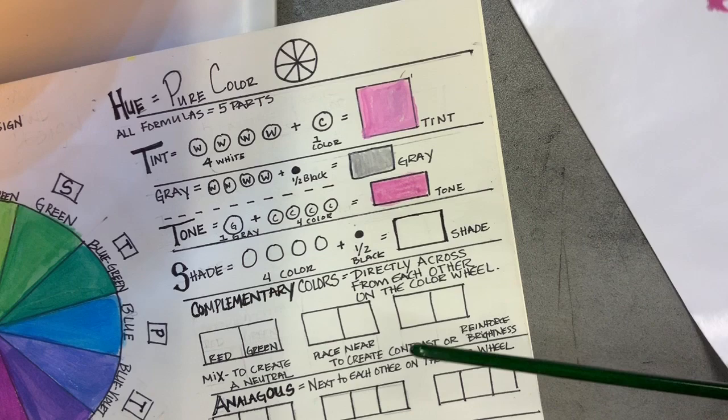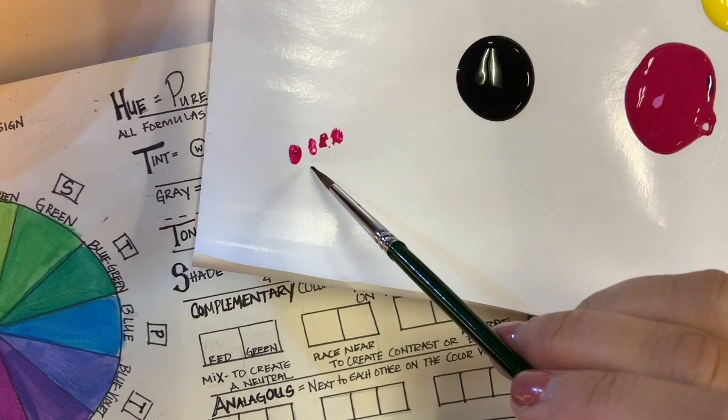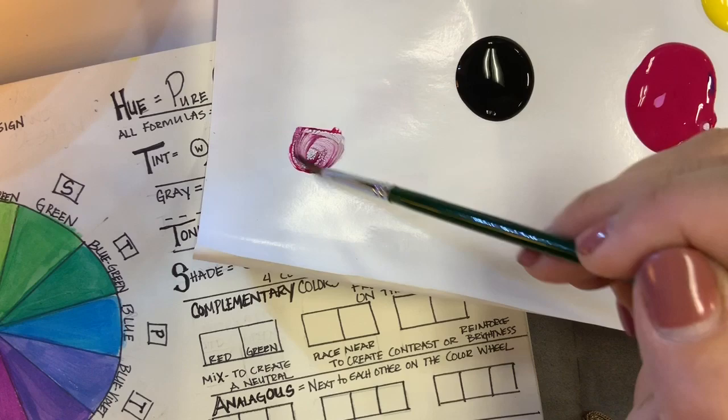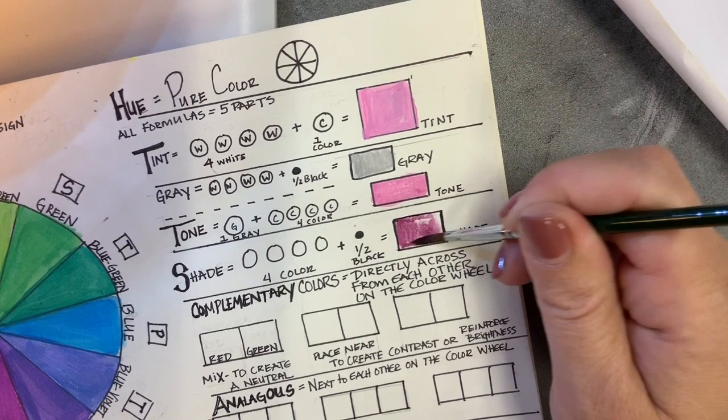Now with our shade, we're going to do four parts color. So I've got my four dots there, I wash my brush, and then just a half a dot of black. And this is what I want you to learn: you do not need a lot of black when you are mixing with black. Black is a very powerful color. And that's going to create a shade. A shade is when we mix color with pure black.